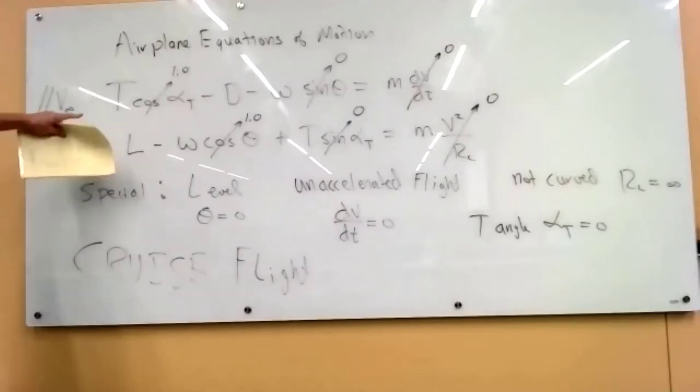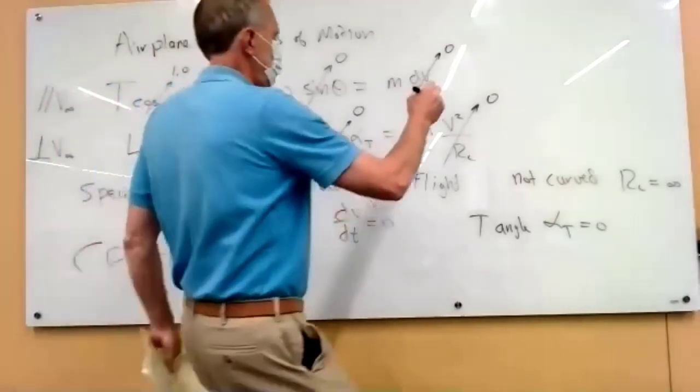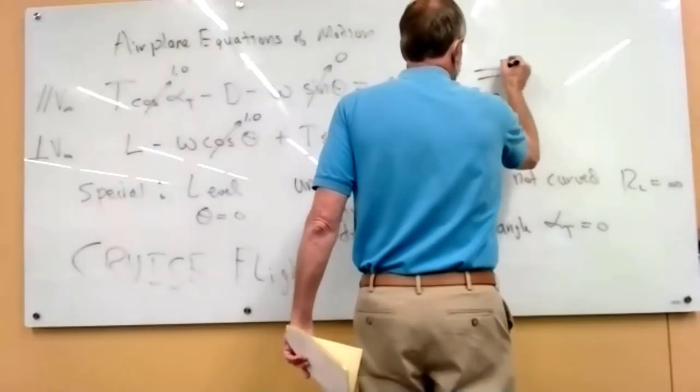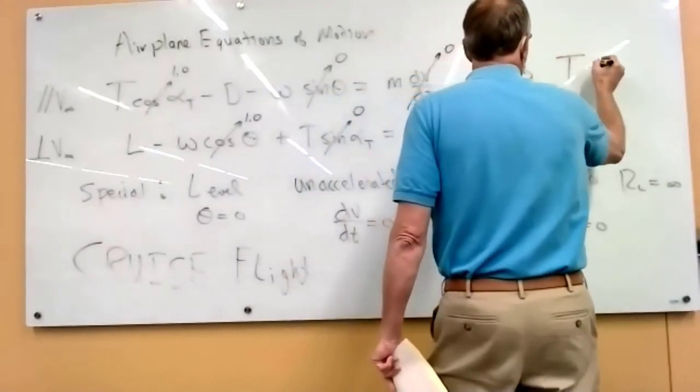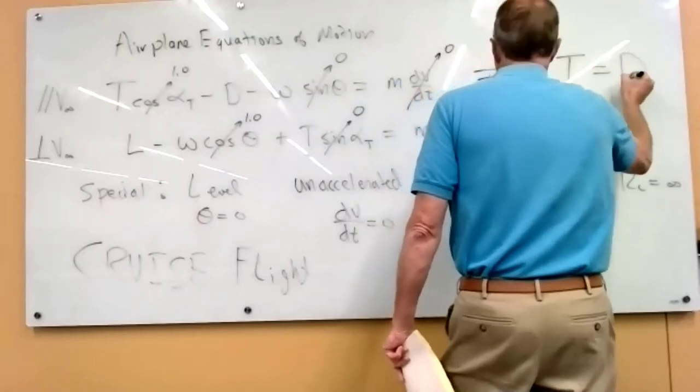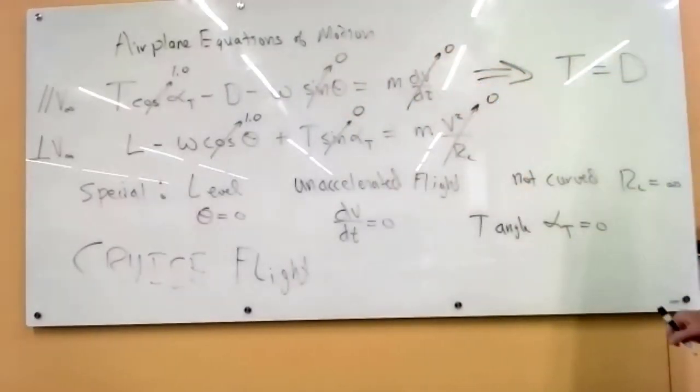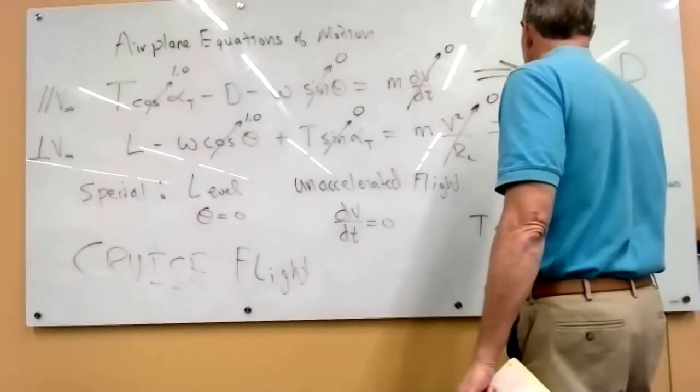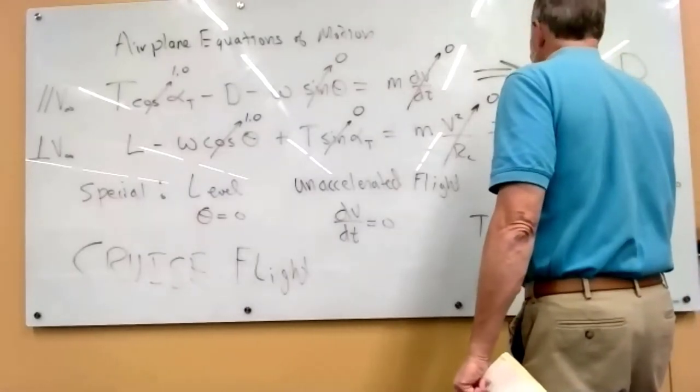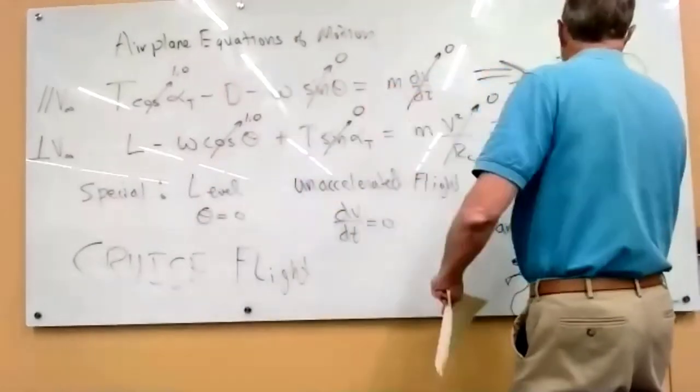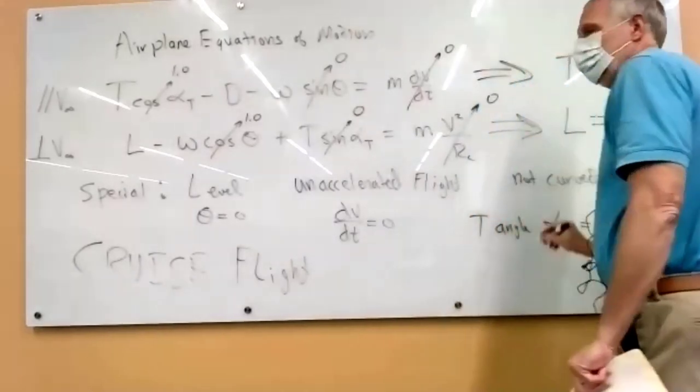Unaccelerated, so this is zero, and this cosine is one. This top equation turns into thrust equals drag, move the minus drag over to the other side. And the bottom equation turns into lift equals weight.